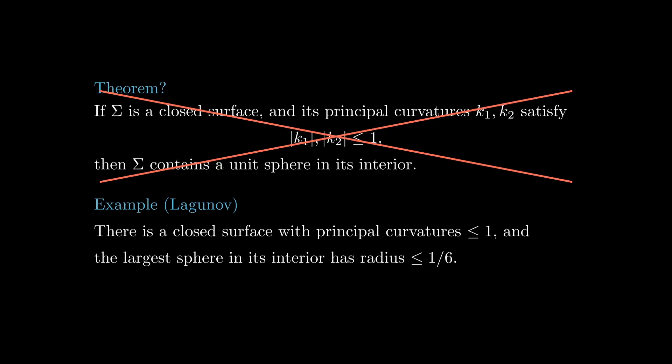This example shows that an analog of the Moon in a Puddle theorem for surfaces is false. Also notice that its Gauss curvature is in absolute value less than 1, so an analog of the theorem using Gauss curvature instead of principal curvatures is also false. I hope you enjoyed this construction, and see you next time!